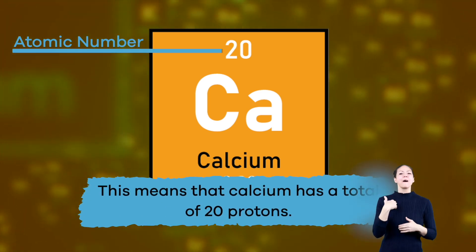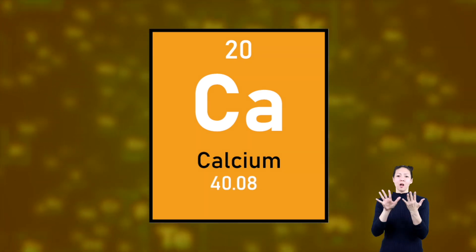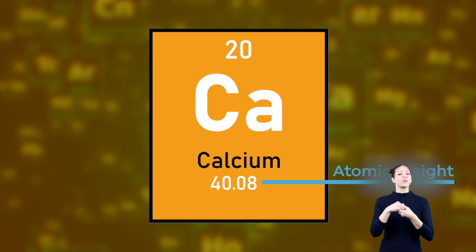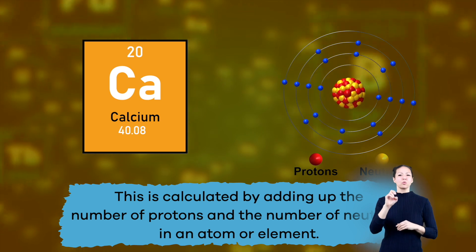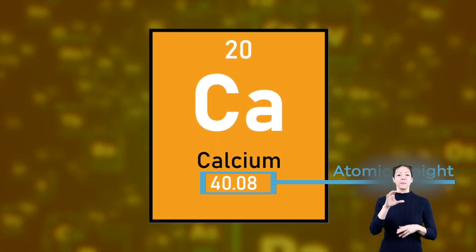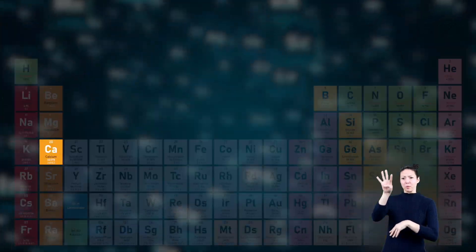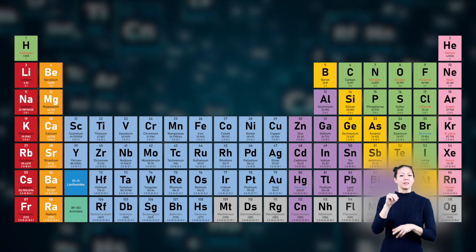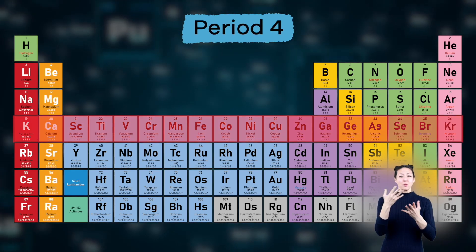This means that calcium has a total of 20 protons. Along with atomic number, there is also atomic weight or mass, which is calculated by adding up the number of protons and the number of neutrons in an atom or element. The atomic weight for calcium is 40.08. Looking at the periodic table, we can see that calcium is in the alkali metals group and can be found in period 4.